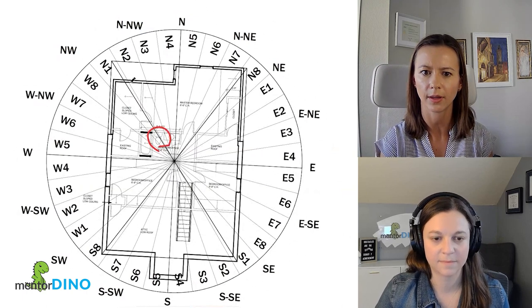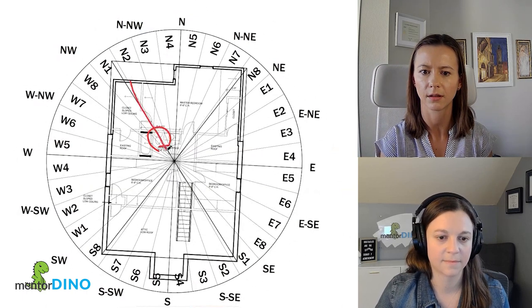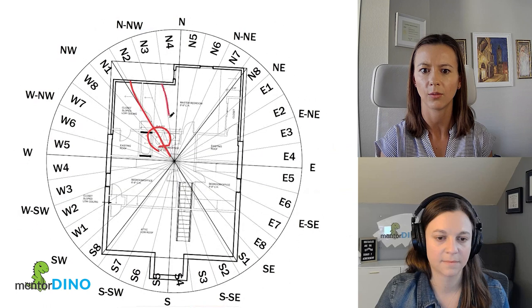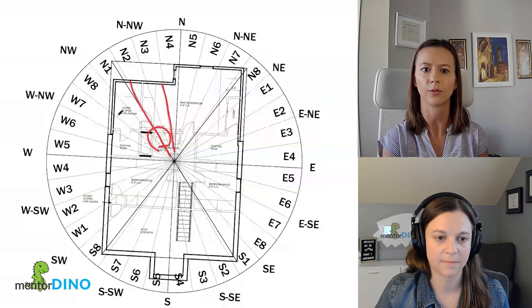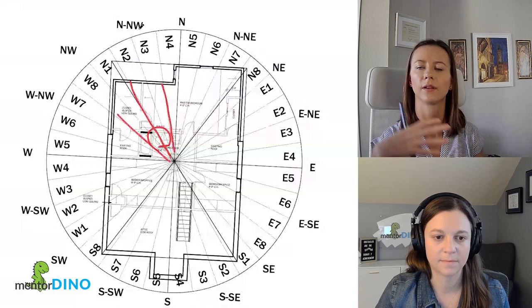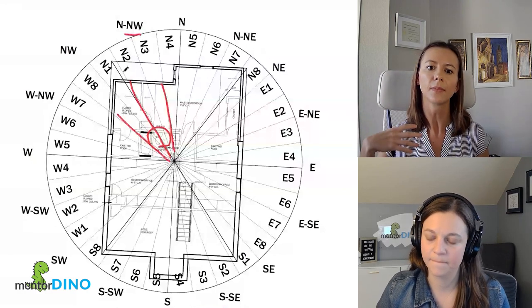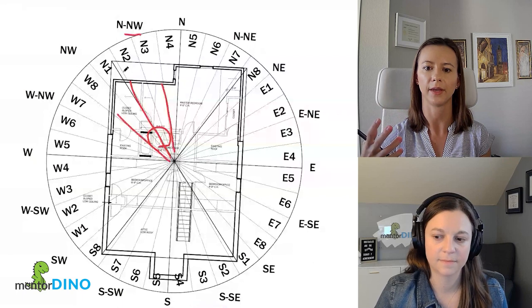So your toilet upstairs is mostly in the north-northwest zone. So the north-northwest zone has to do with attraction and sexuality.